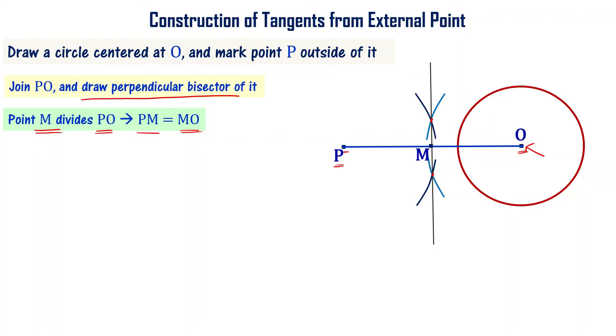Use that center point as the center of the circle and draw a circle with radius R equal to PM or MO. We want to draw a circle with radius PM length or OM length. Draw a circle.